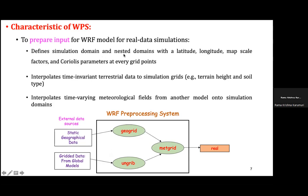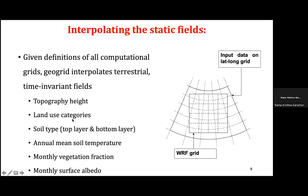Terrestrial data is interpolated to your domain via geogrid. Time-varying meteorological fields from global models are interpolated to the model domain by metgrid. Ungrib unpacks global model data, which provides the atmospheric initial and boundary conditions. Geogrid fixes the domain, ungrib unpacks the data, and both are interpolated at the metgrid level, then passed to the real.exe time integration component. Static fields interpolated include topography height, land use category, soil type, annual mean soil temperature, and monthly vegetation fraction.